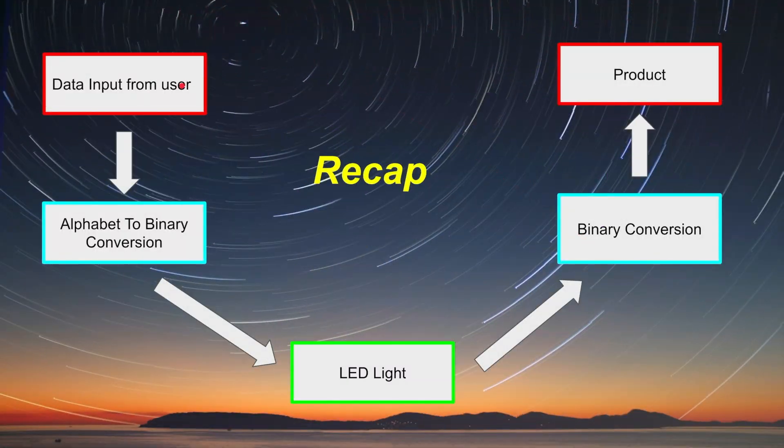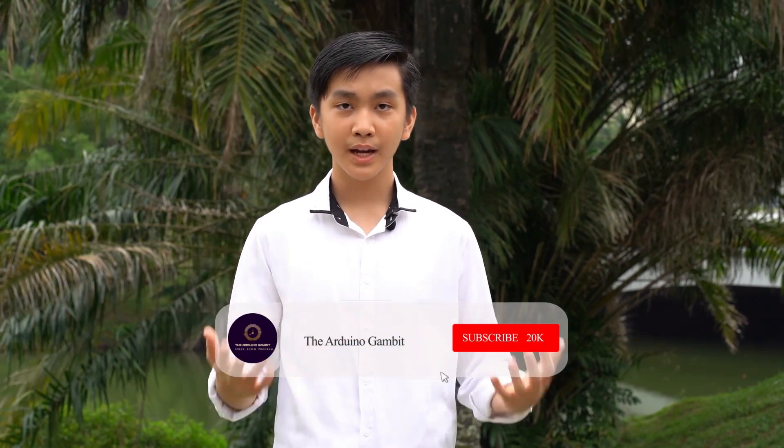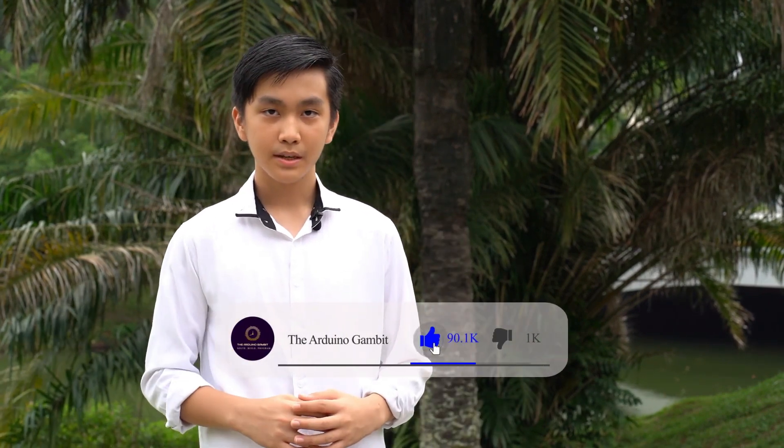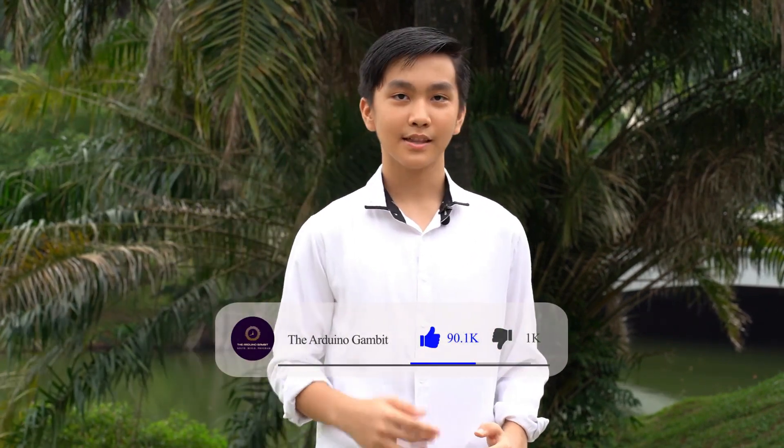To recap: we take data input from the user, perform alphabetical to binary conversion, transmit via LED light, and get our final product. We're not fully aware of how capable light fidelity will be in the future, but one thing's for sure — it's definitely an evolutionary internet of things, and the time will come where we use it in our everyday lives. Data transmission will be revolutionized, and it's going to be substituting Wi-Fi in the future. So see you 10 years in the future — thanks for watching.